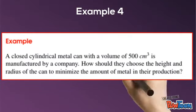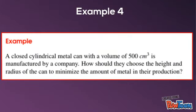Example 4. A closed cylindrical metal kin with a volume of 500 cubic centimeters is manufactured by a company. How should they choose the height and radius of the kin to minimize the amount of metal in their production?